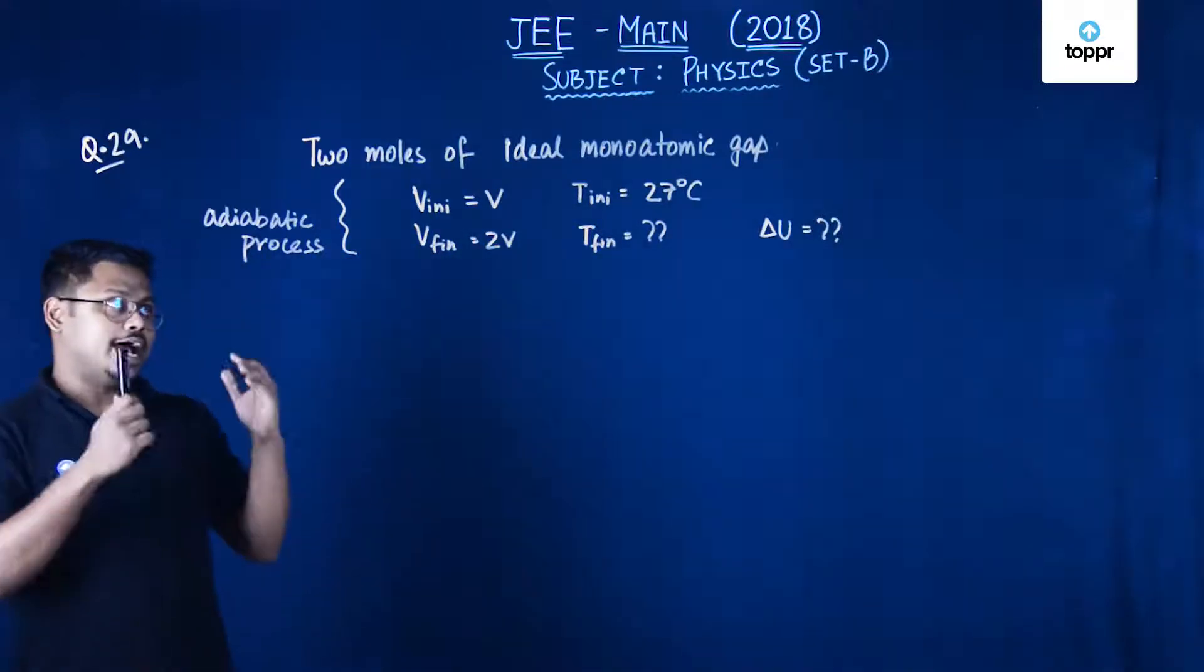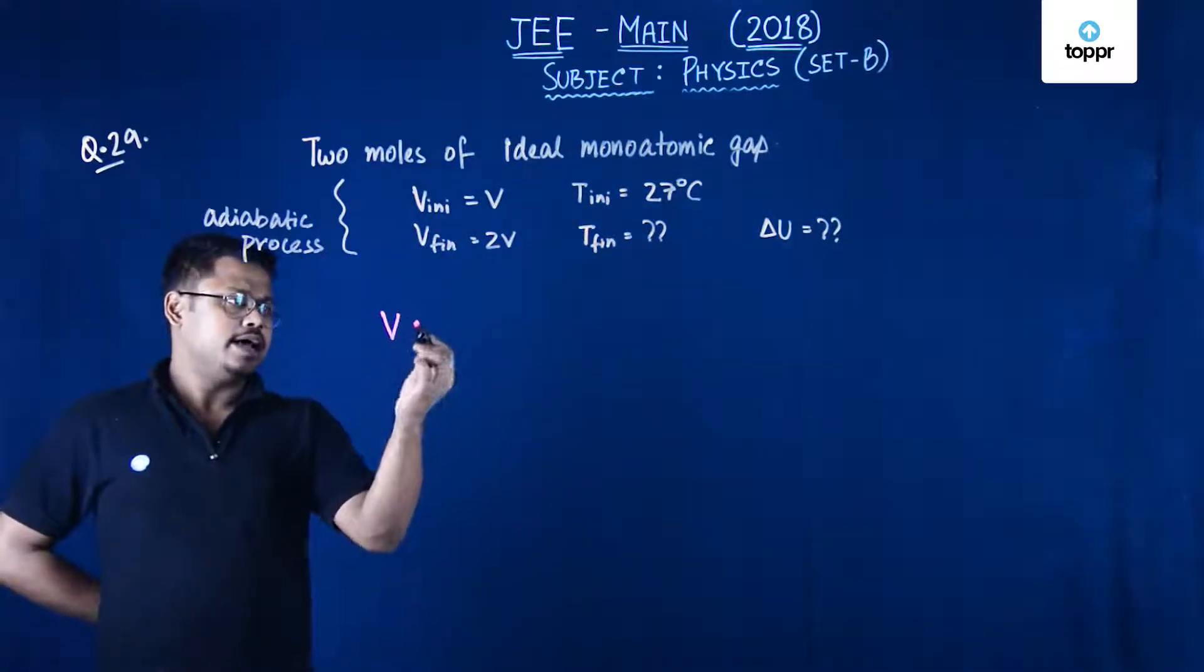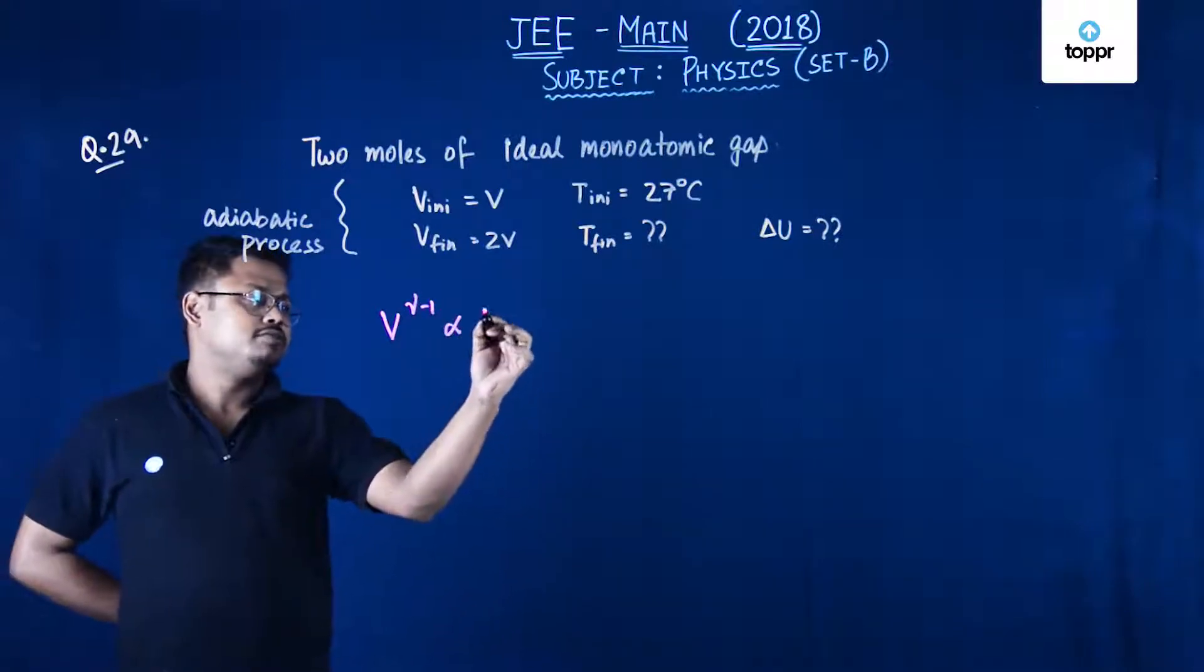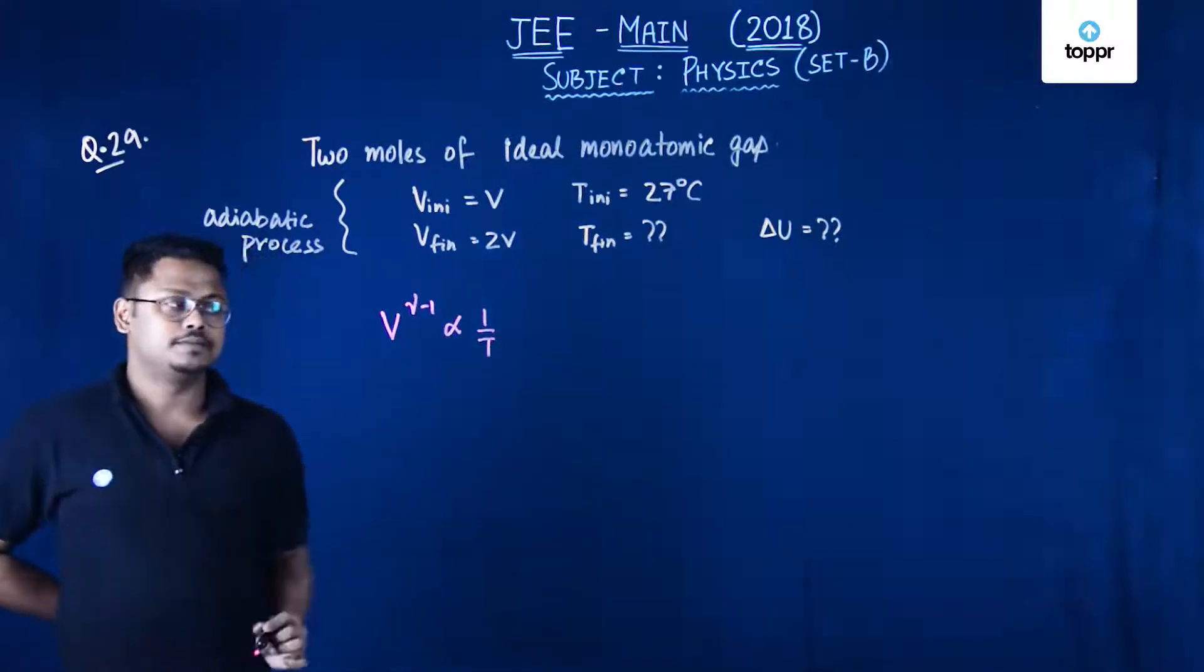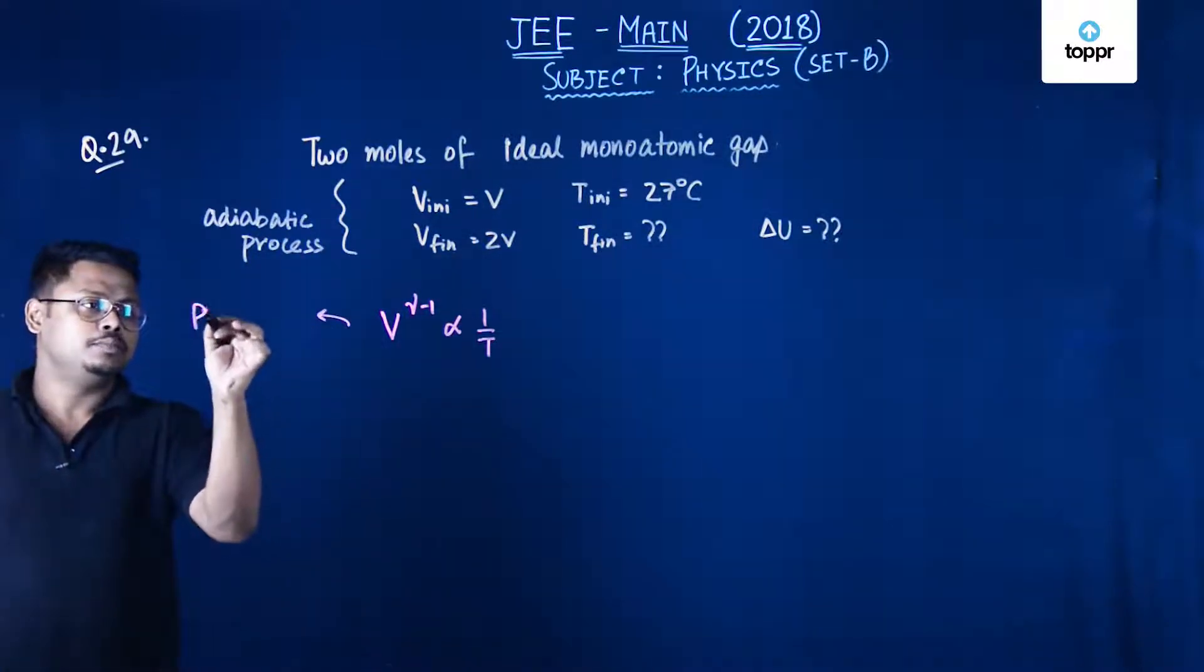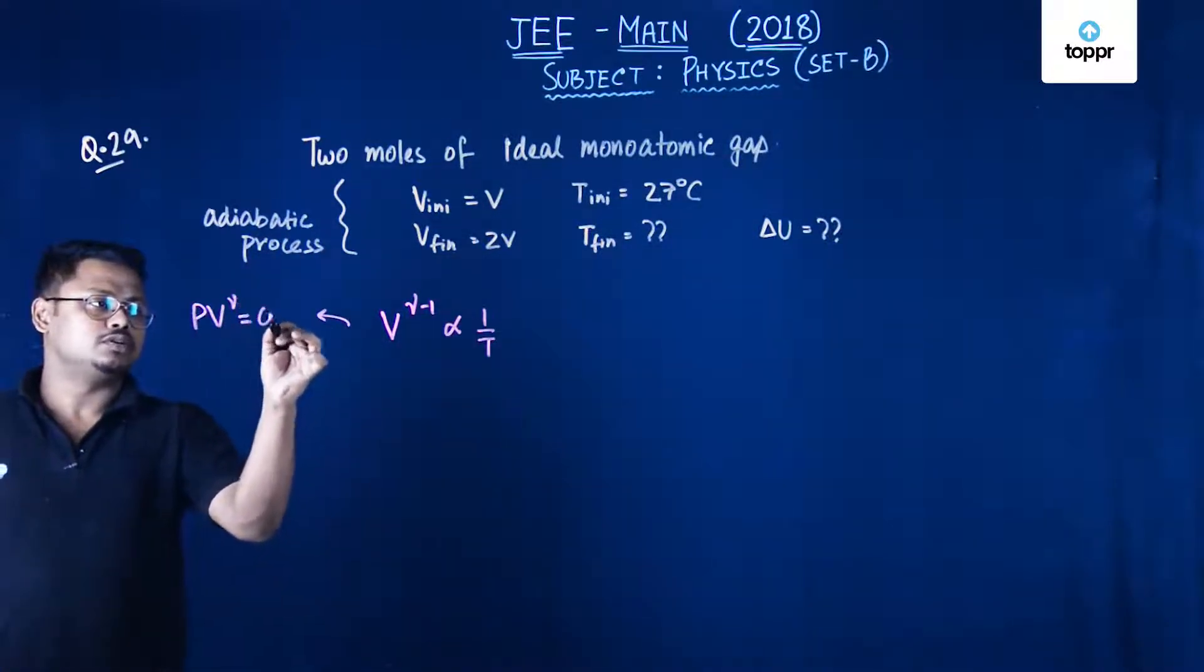For an adiabatic process we know that V to the power gamma minus 1 is inversely proportional to temperature. From where does it come? It comes from PV to the power gamma equals to constant.